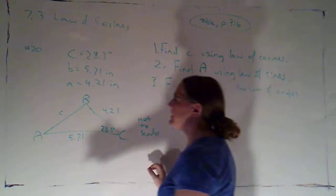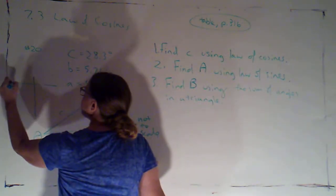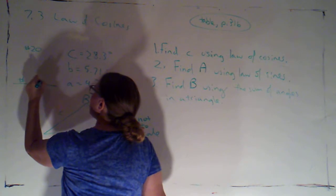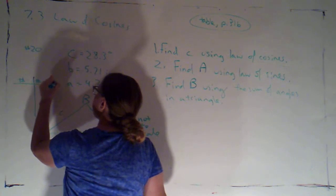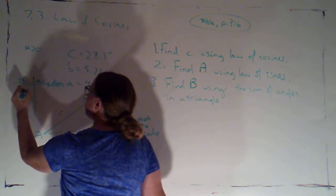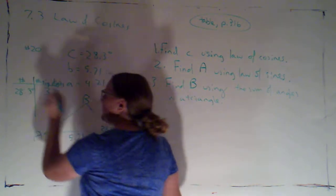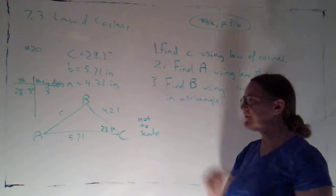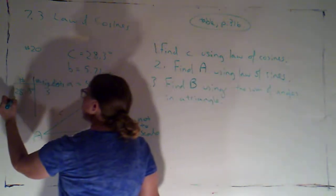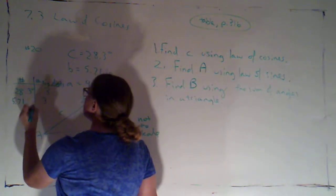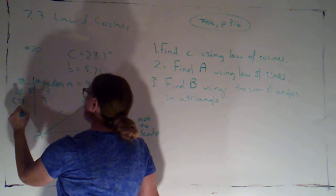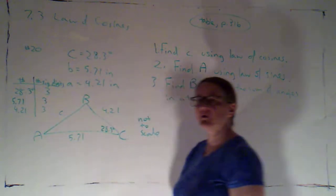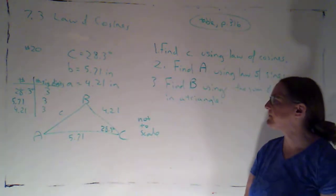Alright, first thing I'm going to do here is just create a table where I list these numbers and then the number of significant digits. So 28.3 degrees, that's going to be 3 significant digits. 2 for the degrees, 1 for the extra digit. 5.71 inches is 3, 4.21 inches is also 3. So it looks like we're going to be rounding things to 3 significant digits.